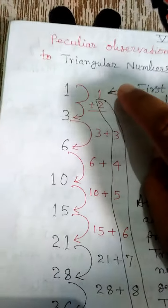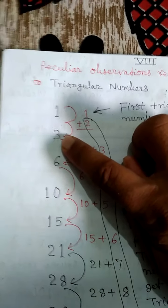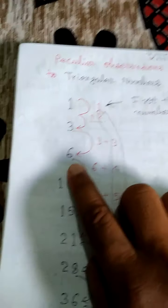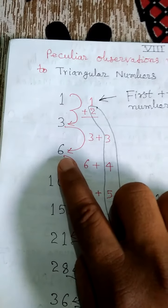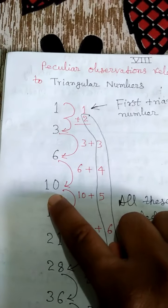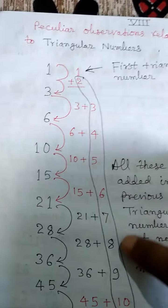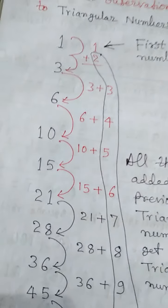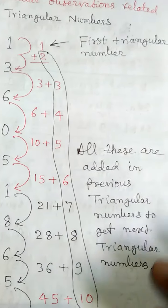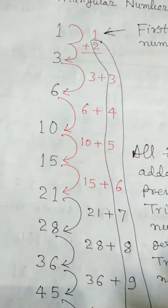When we add 2 to the first triangular number, we get the second triangular number, that is 3. Again, when we add 3 to the second triangular number, we get the third triangular number, that is 6. When we add 4 to the third triangular number, then we get 10, which is also a triangular number. In this way, 1, 2, 3, 4, 5, 6, 7, 8, 9, 10 — we see a pattern: all these are added to the previous triangular number to get the next triangular number. In this way, we can find up to infinite triangular numbers.